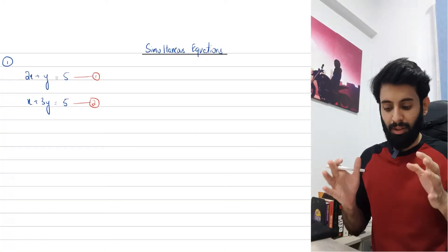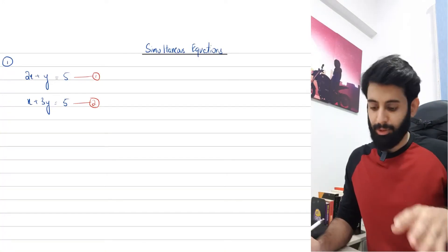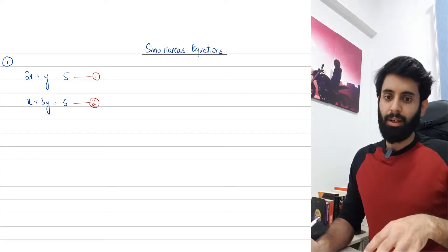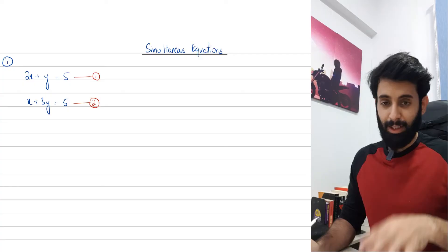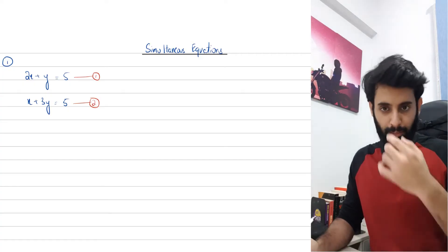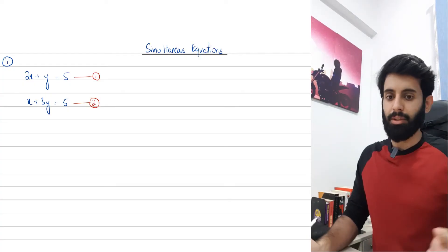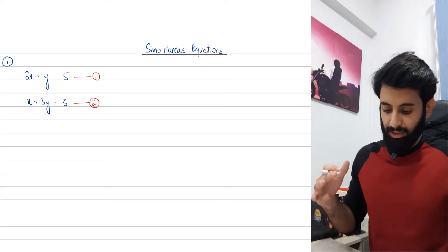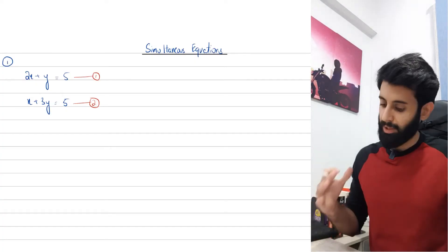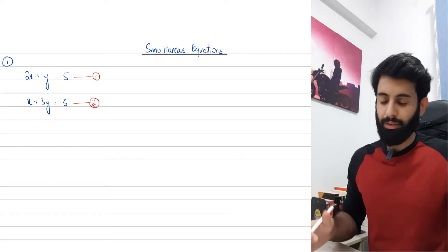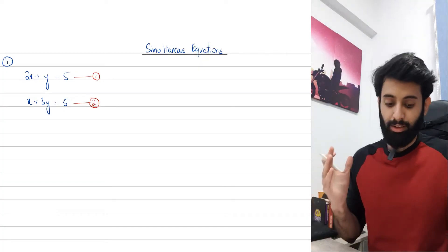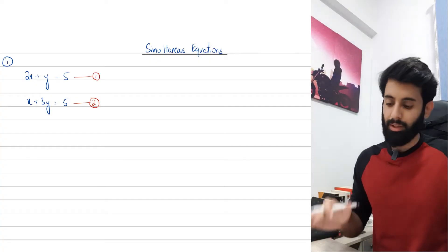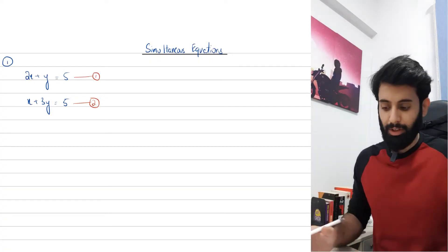In this video, I'm going to be covering the topic of simultaneous equations and teach you how to solve two equations simultaneously. The method I'm going to focus on is elimination for now. I do have a couple of videos on substitution — I'll leave a link in the description box. The reason I want to focus on elimination is because this method is far more efficient, a lot neater, and if you're an A-level math student, this is the one method you really need to get a good grip on.